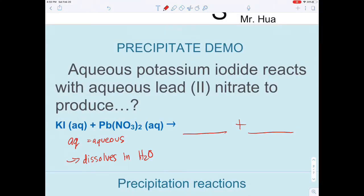Now we want to predict the products. This is what we call a double displacement reaction. The two metals are going to switch places. I'm going to get lead iodide and potassium nitrate. I wrote an 'S' next to the lead iodide, and 'S' stands for solid.